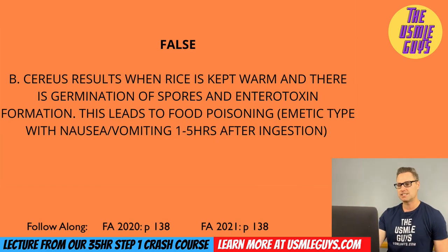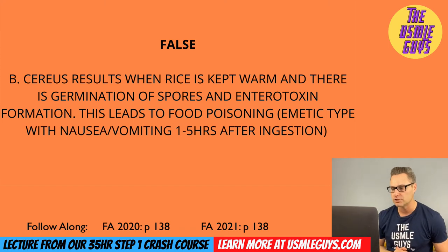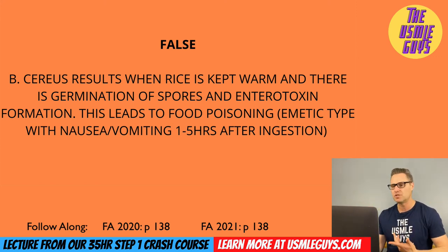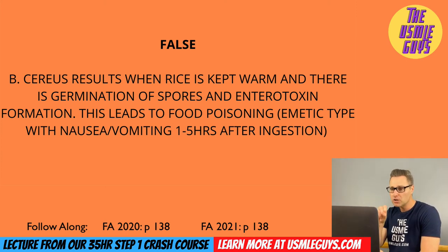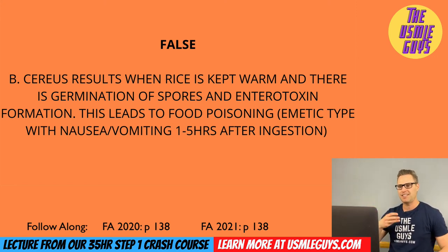This statement is false. Bacillus cereus is a gram-positive rod-shaped bacteria and a very common, highly tested cause of food poisoning. There are two types: the emetic type, causing nausea and vomiting within one to five hours after ingestion, and the diarrheal type, causing watery non-bloody diarrhea with abdominal pain within eight to 18 hours. Food poisoning occurs because spores found in the food — classically rice — don't get destroyed during cooking. When rice is kept warm, those spores germinate and produce an enterotoxin. Treatment is supportive: replenish fluids and treat symptoms.